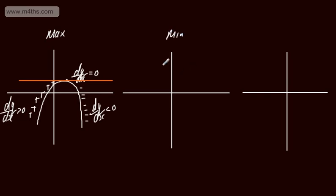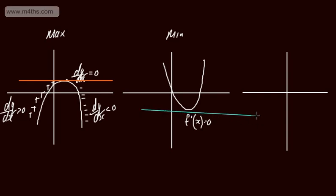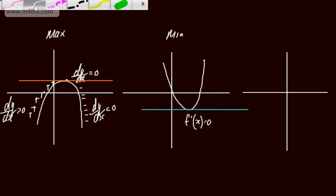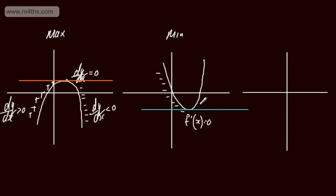If we now consider a minimum, a positive quadratic will show this quite nicely. Using function notation, f dashed of x equals zero at this point, so the gradient of the tangent to the curve is zero — parallel to the x-axis. We have a decrease in function to the left of the stationary point, so the derivative will be less than zero there. Then we have an increase in function to the right, so f dashed of x is greater than zero for all x-coordinates to the right of that stationary point.